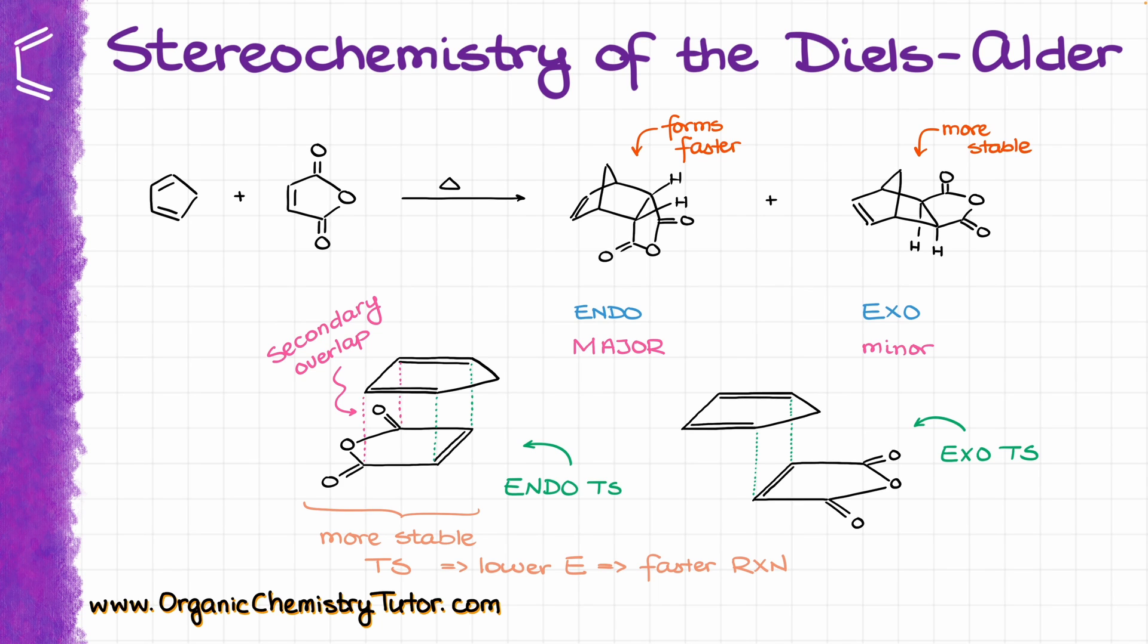While the exo product will be more thermodynamically stable in most cases, it is going to be the minor product simply because we're always going to be stopping our reaction before it can reach the state of equilibrium.